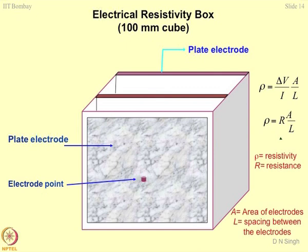You can divide this box into different parts by shifting the plate electrode to another distance, thereby changing the distance between the electrodes for non-conducting materials. Using the simple equation ρ = ΔV/I · A/L, where A is the area of cross-section and L is the length between two electrodes, you can work out the resistivity. ΔV/I is the resistance, and A/L gives the geometrical properties of the electrode.